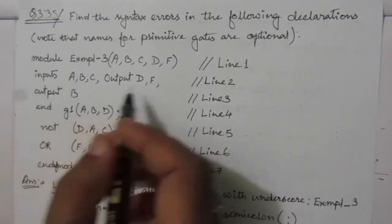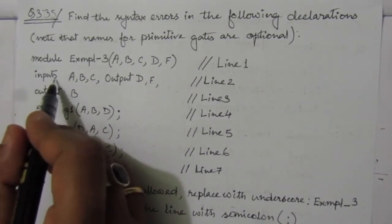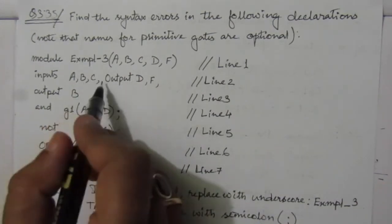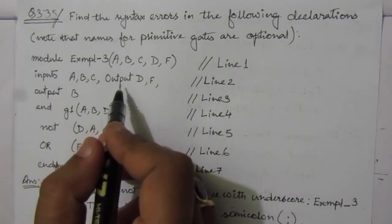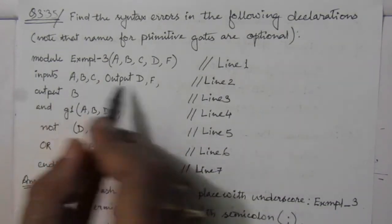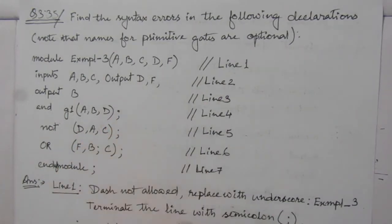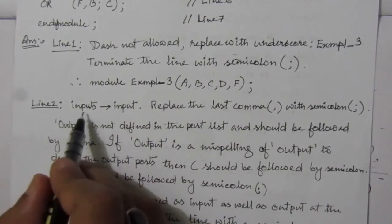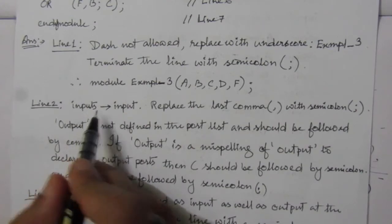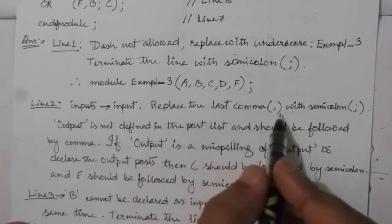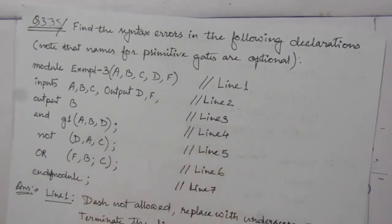In the second line, the first error is 'inputs' — we have to write it as 'input'; the S is not required. Then we can see there is no comma separating the variables. We have to replace the last comma with a semicolon to terminate the input declaration.